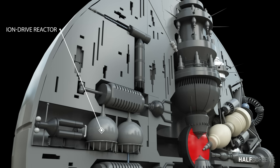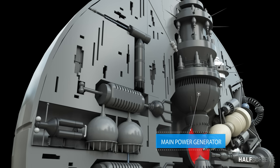Next to the unit is the ion drive reactor and toward the center is the main power generator used to provide most of the power for electric power grids inside the station.